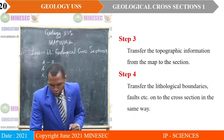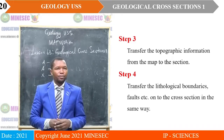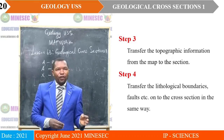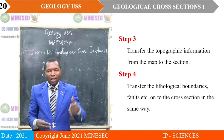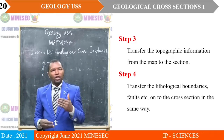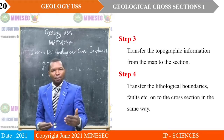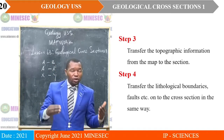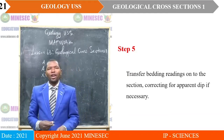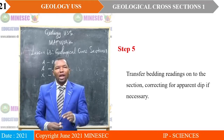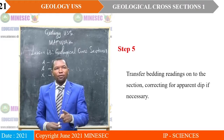Step two: draw axes of an approximate scale with the topographic values, which will guide you to come up with the vertical scale. Step three: transfer the topographic information from the map to the section. Step four: transfer the lithological boundaries and faults onto the cross-section in the same way. You are doing two things — transferring the topographic information to have the profile, then from the profile you transfer the lithological boundaries and faults into the section. Step five: transfer bedding readings onto the section, correcting for apparent dip if necessary.